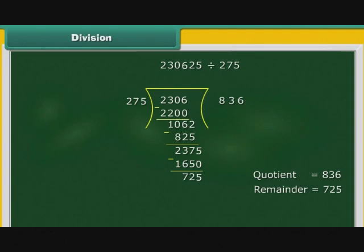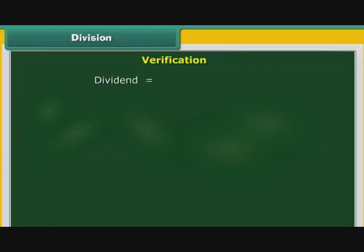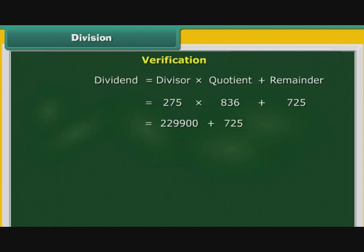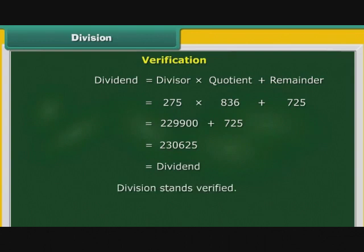Let us now verify the division with the help of this formula: Dividend = Divisor × Quotient + Remainder. That is 275 × 836 + 725 = 229900 + 725 = 230625. That is equal to the dividend. Therefore, the division stands verified.